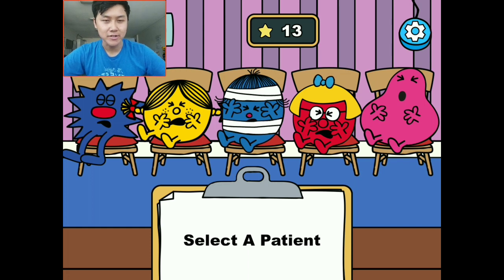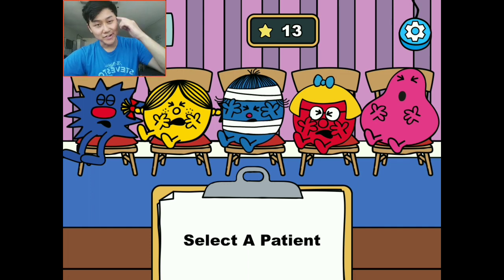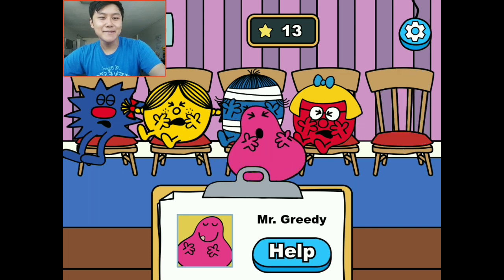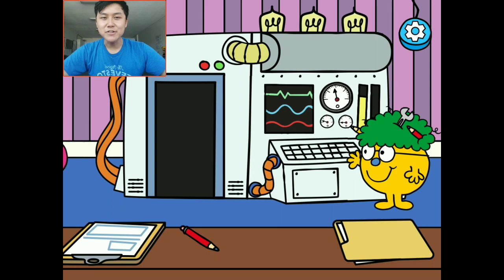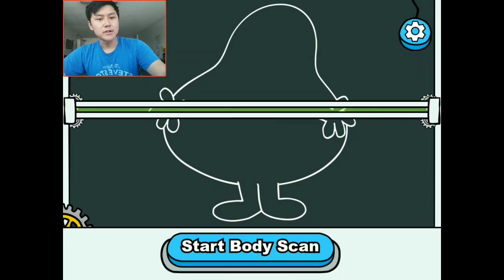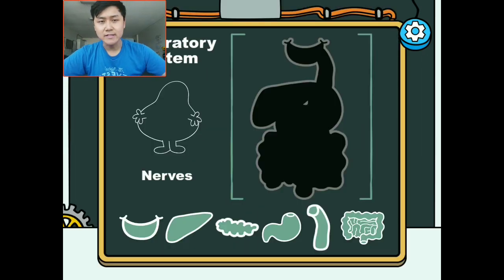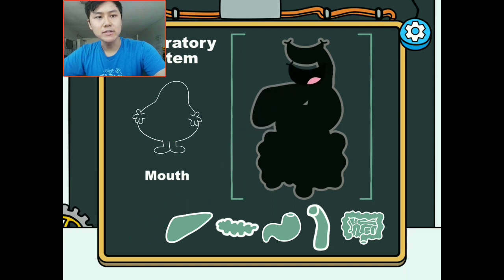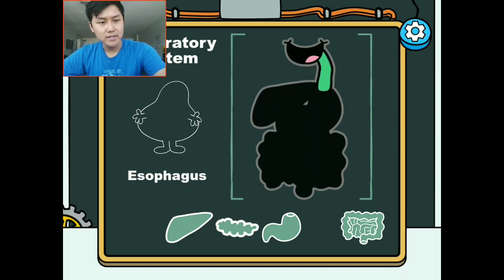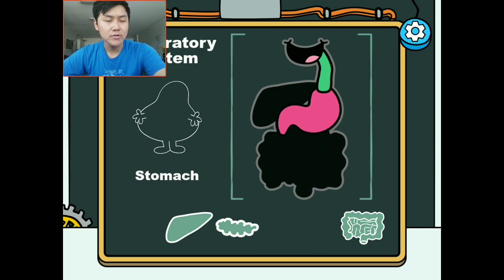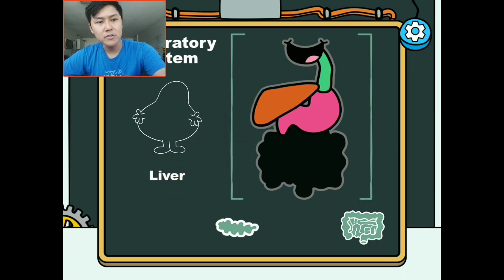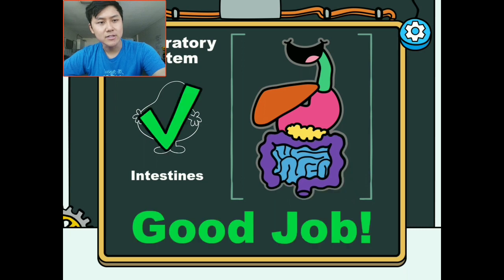Last character — our fifth and final patient. I have a personal love for Mr. Greedy. Mr. Greedy is just greedy — he eats too much and takes too many things. So let's give some pity to Mr. Greedy. We're going to start his body scan, and it looks like this is his digestive system — perfect for Mr. Greedy since he ate too much. His mouth is where things go in, then his esophagus, then his stomach. The liver helps with filtering, as does the pancreas with the blood. Then the food travels down into his intestines and is digested — that is his digestive system.